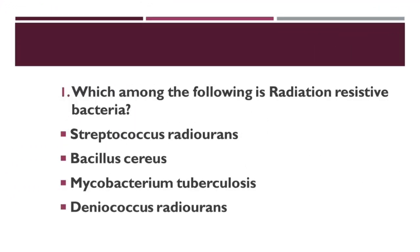Which among the following is a radiation-resistant bacteria? Option A: Streptococcus radiorans. Option B: Bacillus cereus. Option C: Mycobacterium tuberculosis. Option D: Deinococcus radiodurans. Correct answer: Deinococcus radiodurans is the radiation-resistant bacteria.